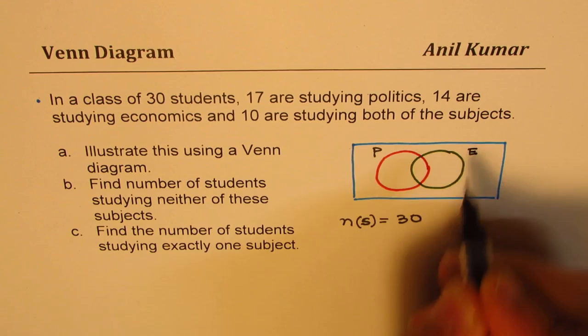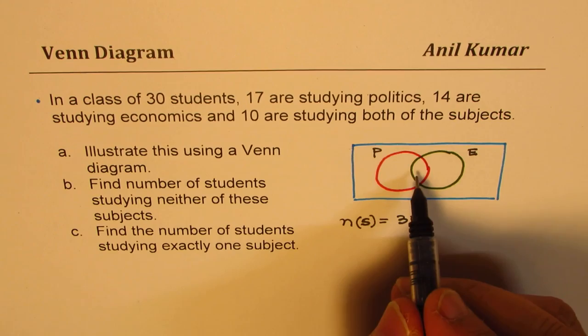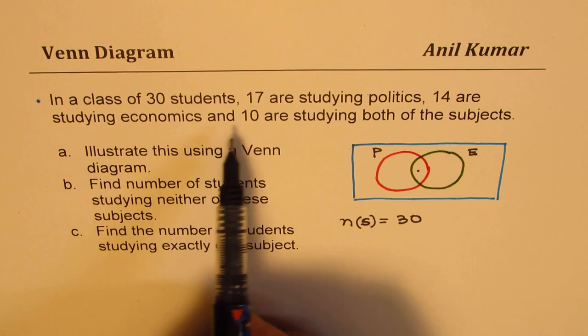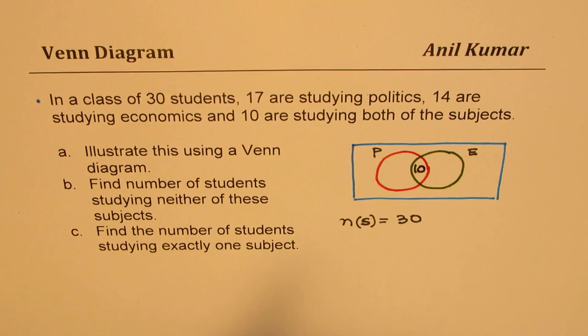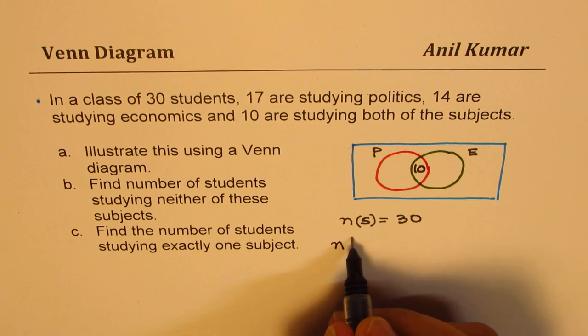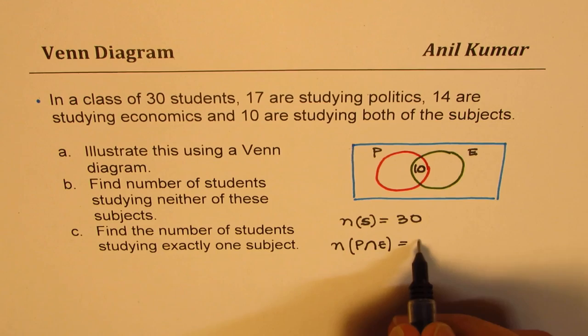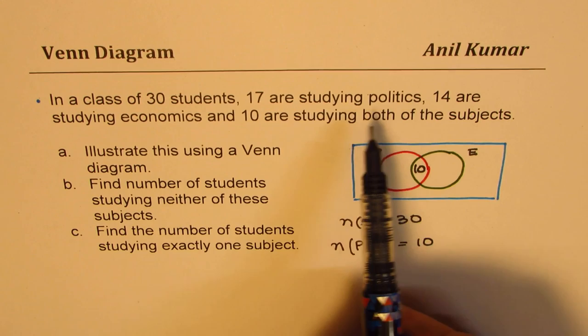Now whenever we are given like this, we have to start from inside. So it is given 14 are studying economics and 10 are studying both the subjects. So common is 10, correct? So that is both the subjects. So the intersection of politics and economics is given to us as 10. Now total number of students studying politics is 14.